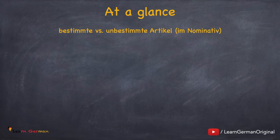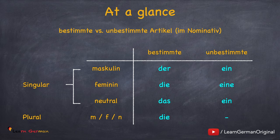So let's summarize bestimmte and unbestimmte Artikel im Nominativ. For masculine, the bestimmte Artikel is der and unbestimmte Artikel is ein. For feminine, the bestimmte Artikel is die and the unbestimmte Artikel is eine. For plural, irrespective of gender, the bestimmte article is die and there is no unbestimmte Artikel. Remember, these articles are for the nominative case; further cases will be discussed in later chapters. You can learn the unbestimmte Artikel only if you have learned the bestimmte Artikel for various nouns.